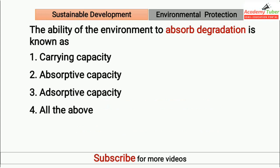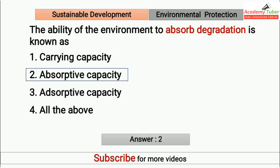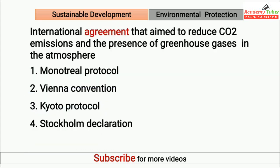The ability of the environment to absorb degradation is known as? Answer is absorptive capacity. International agreement that aims to reduce carbon dioxide emissions and the presence of greenhouse gases in the atmosphere is? Answer is Kyoto Protocol.